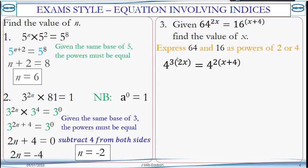So 64 itself is 4 cubed. So you have 4 cubed to the power of 2x. Then we have 16, which is also 4 squared, then to another power of x plus 4 in brackets. Now remember, when you have an index to another index, the rule is to multiply the powers.